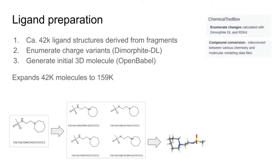The first stage in the workflow is ligand preparation. We started with a library of around 42,000 structures derived from the fragment network — a service which Diamond provides for deriving compounds structurally similar to a list of input fragments. The next stage is charge enumeration: generating all possible charge forms of the structures between pH 4.4 and 10.4, which takes us from 42,000 molecules to 159,000. Finally, for each of these enumerated charge variants, we generate a three-dimensional conformation — starting from a two-dimensional SMILES representation and generating the 3D structures using OpenBabel.